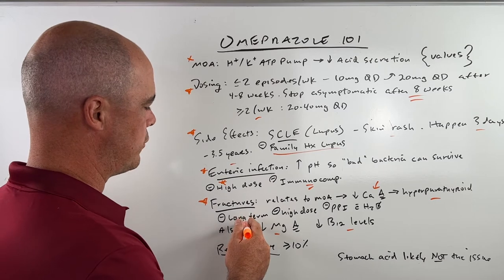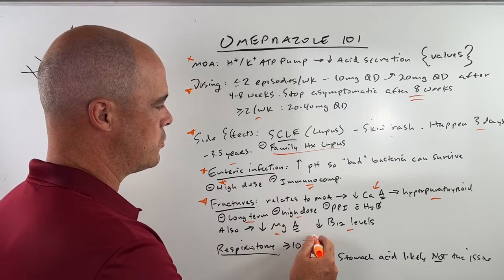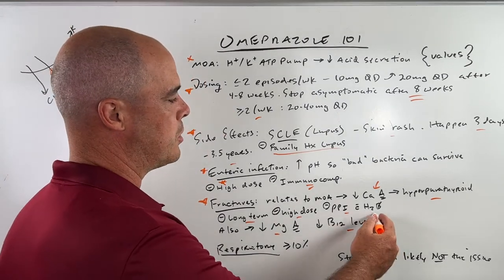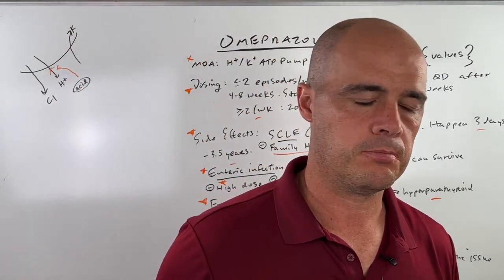So again, risk factors: long-term use, higher dose. And if you're taking Prilosec with some of the H2 blockers, for example, one would be Pepcid.